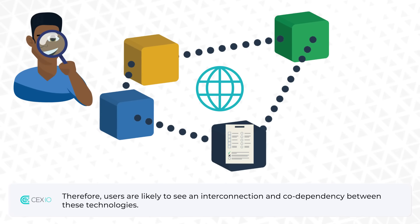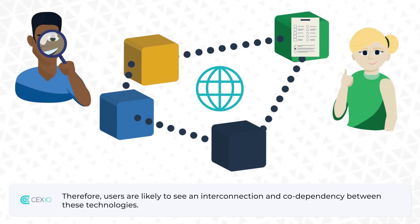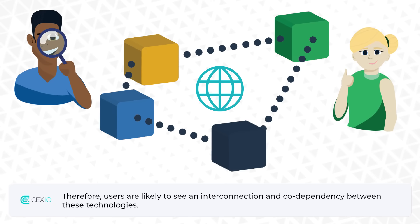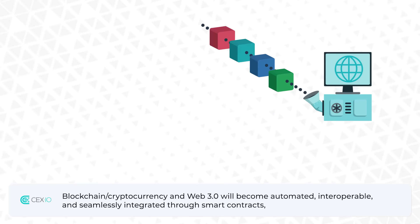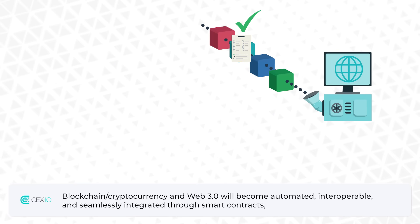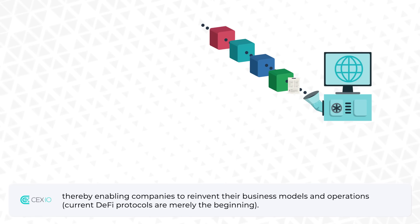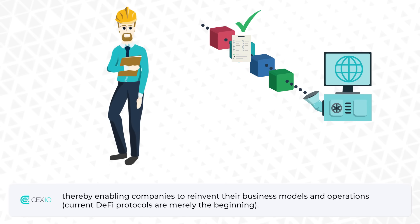Therefore, users are likely to see an interconnection and codependency between these technologies. Blockchain or cryptocurrency and Web 3.0 will become automated, interoperable and seamlessly integrated through smart contracts, thereby enabling companies to reinvent their business models and operations. Current DeFi protocols are merely the beginning.